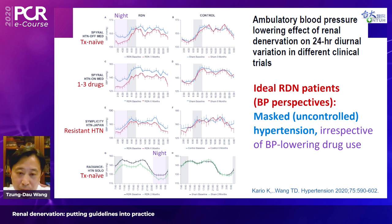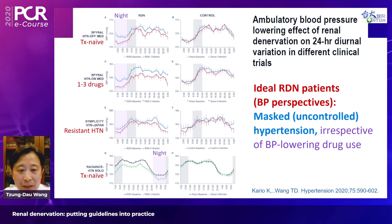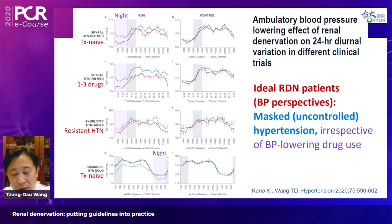Renal denervation should not be viewed as a last-resort blood pressure control option reserved only for resistant hypertension. Based on the SPYRAL HTN OFF MED, SPYRAL HTN ON MED, and RADIANCE SOLO studies, patients from treatment-naïve to those on one to three drugs, and those with traditional resistant hypertension in the SYMPLICITY HTN Japan trial, all demonstrated consistently significant blood pressure reduction across the full spectrum of hypertension.